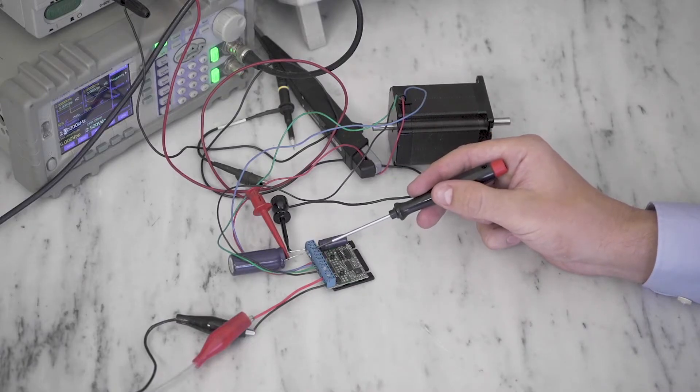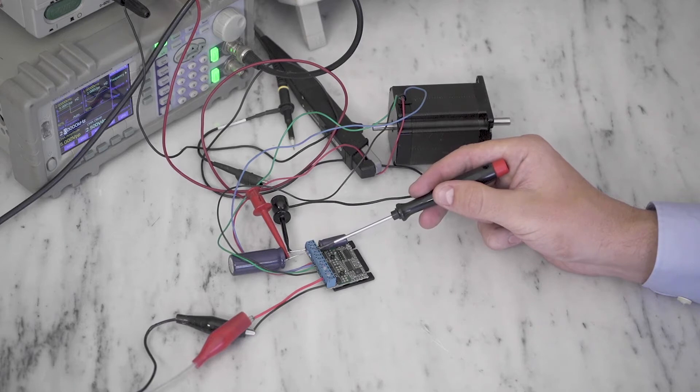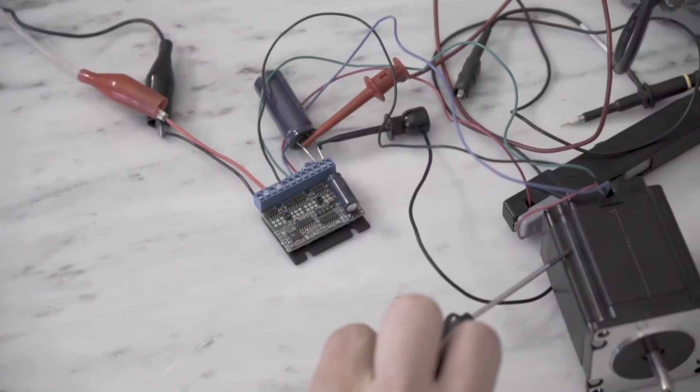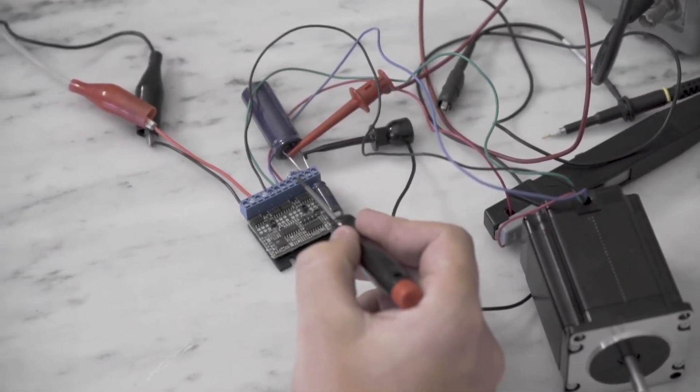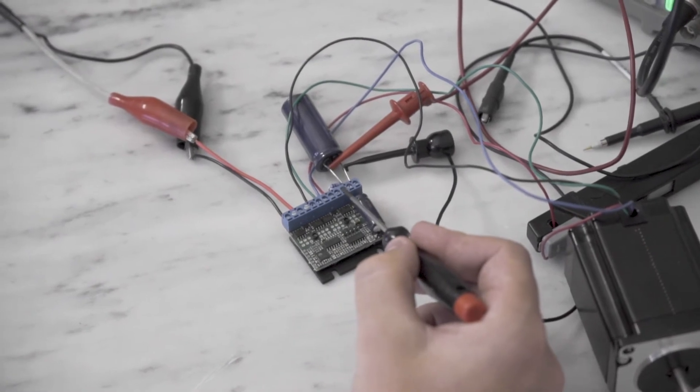Next, connect a current set resistor, which will be based off of your motor winding current. This is a 3.5 amp motor, so I have a 3.48k 1% quarter watt resistor connected.